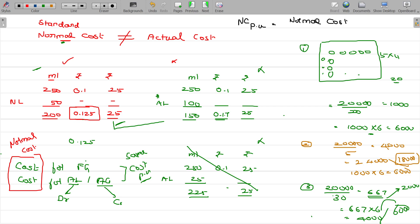In the absence of abnormal loss or abnormal gain, we should decide the normal output. That is normal output. Divide by normal output, you will get the normal cost per unit. That normal cost per unit is used for finding the finished goods value.